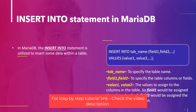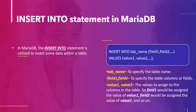In MariaDB we use the INSERT INTO statement to insert some data within our table. This is the basic syntax: first we specify the INSERT INTO statement, then we need to specify the table name. Then we specify certain fields — the column names — for which we want to provide the value. Then we specify the VALUES keyword and after this we specify the specific values for the corresponding fields.